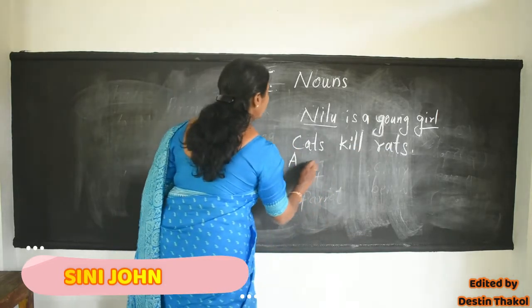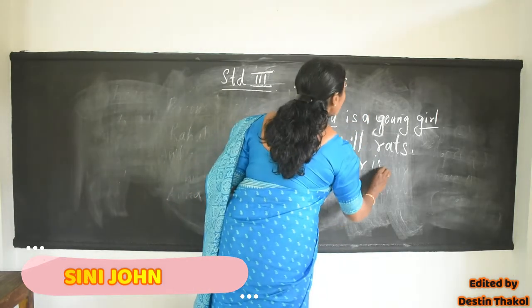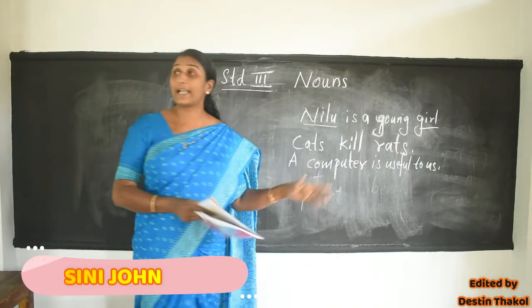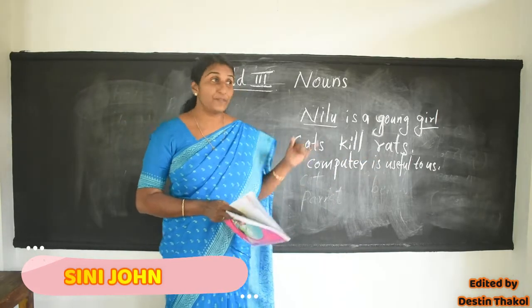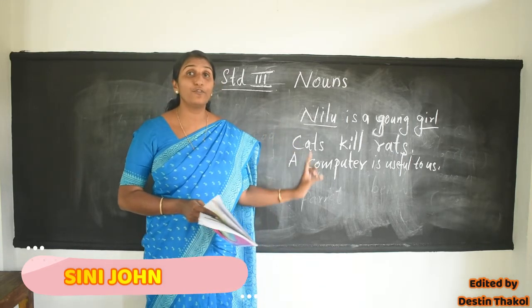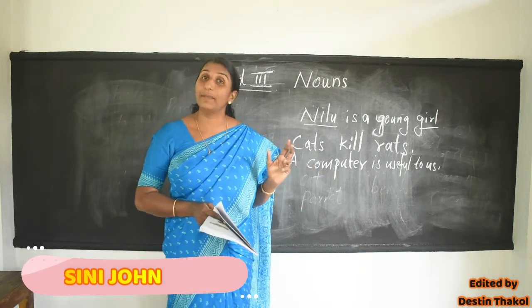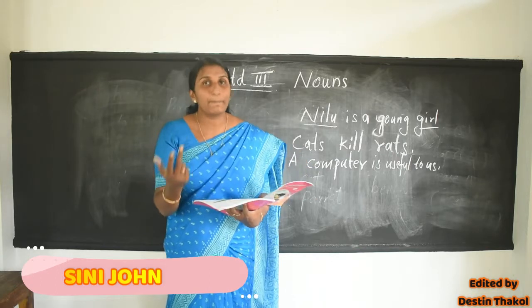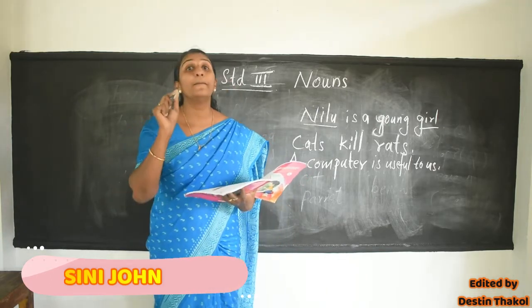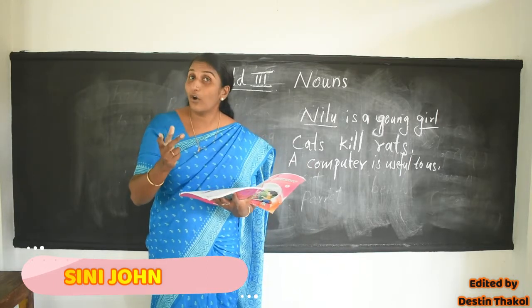Now let's see: a computer is useful to us. Here in this sentence we can see one noun — a name of thing. Which is it? Computer. So computer is a naming word. So noun is the name of person, place, thing, animal or birds.